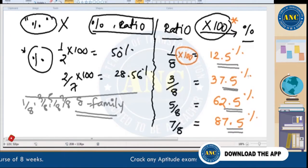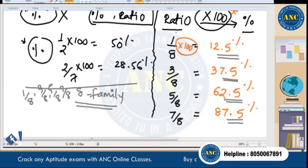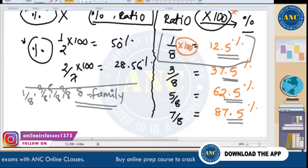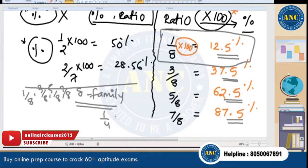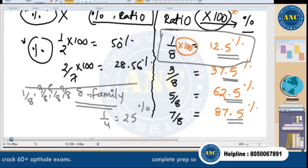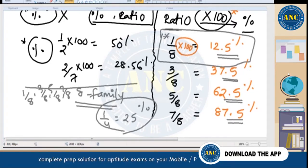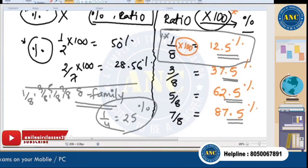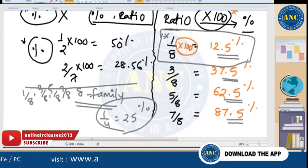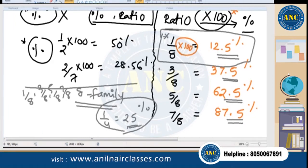To remember 1/8 = 12.5%, think of it this way: 1/4 = 25% (a quarter). Half of that is 1/8, so half of 25 is 12.5%. So 1/8 = 12.5%.